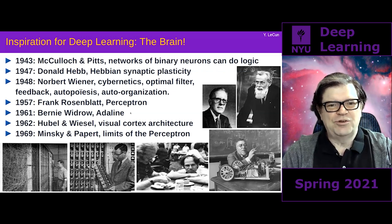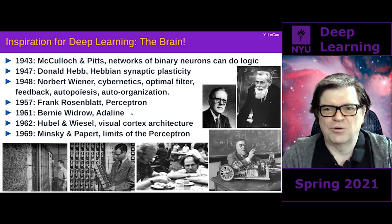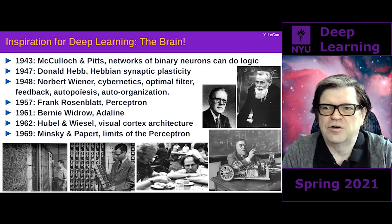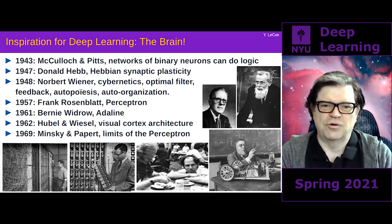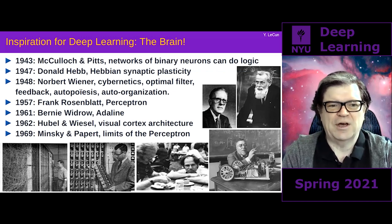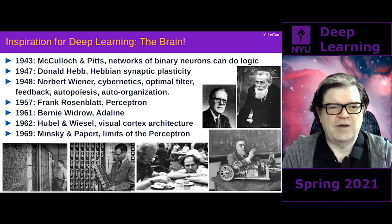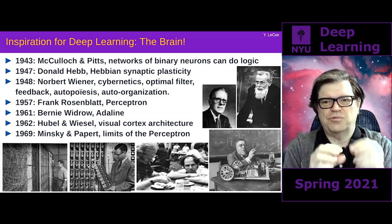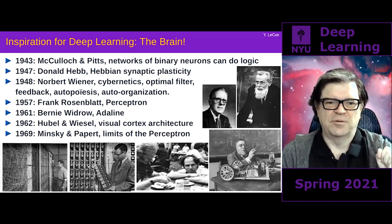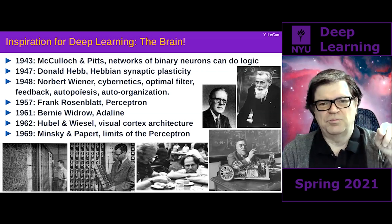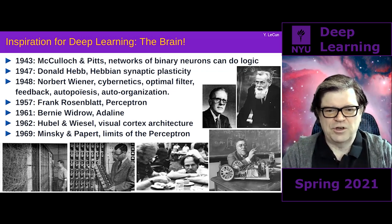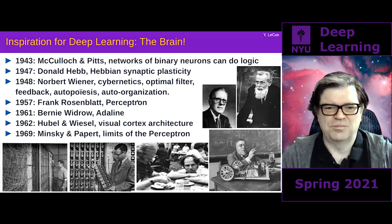Almost simultaneously, Bernie Widrow at Stanford came up with a slightly different but very similar model called ADALINE — also a basic linear classifier. Around the same time, neuroscientists discovered basic properties about the architecture of the visual cortex, which turned out to have a big impact several years later. They got a Nobel Prize for this. They discovered that neurons in the visual cortex look at a small area of the visual field, and many neurons at different places in the visual cortex perform the same operation. That's Hubel and Wiesel.